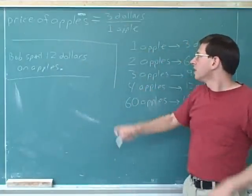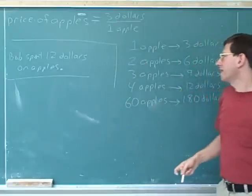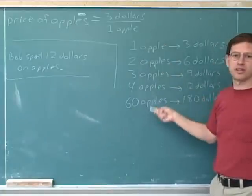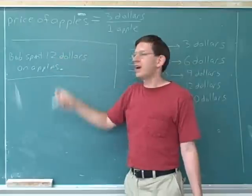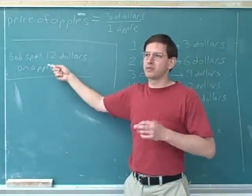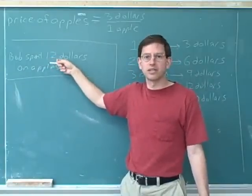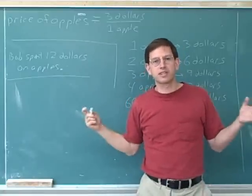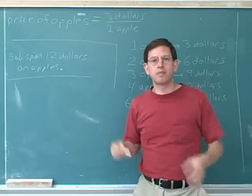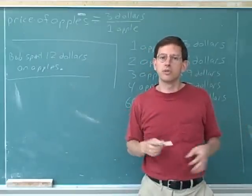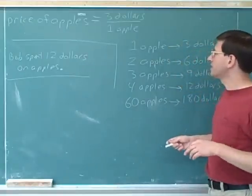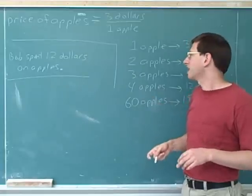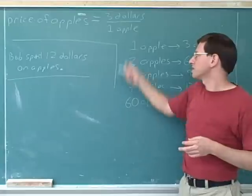Ratio units tell you about hypotheticals; non-ratio units tell you what actually happened. This tells you what would happen if you bought one apple, and that allows you to figure out what would happen if you bought two, three, or 60 apples — but all of these are just hypothetical. It's possible that you didn't buy any apples at all. On the other hand, if Bob spent twelve dollars on apples, he must have bought a specific number of apples — that's non-hypothetical information. This holds true for ratio units in general in physics and chemistry: a ratio unit gives you hypothetical information and a non-ratio unit gives you actual information. Even though ratio units are hypothetical, they're very useful — knowing the price tells you hypothetically how much it would cost if you bought one apple, and from there you can figure out any quantity.